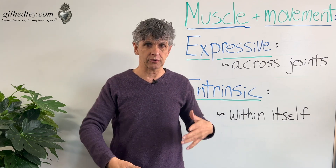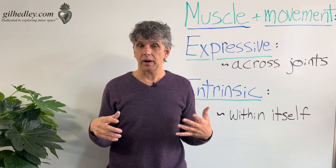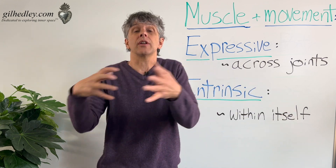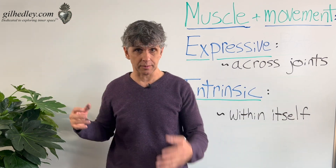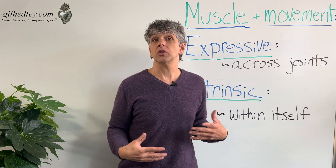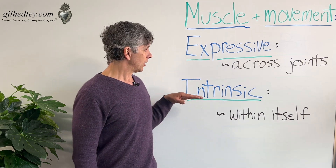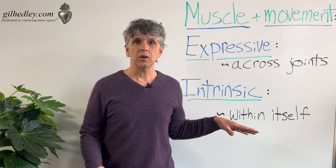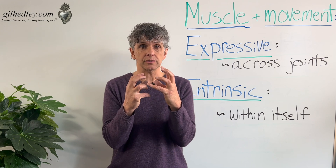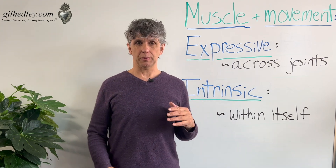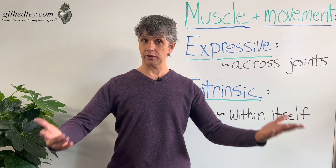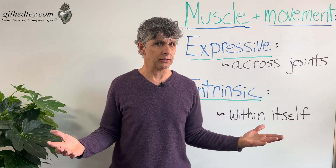In certain spasticity disorders, a single motor nerve partnership fires and it drags other tissue with it, and you get a flailing movement rather than the liquid, easy movement that we're used to enjoying in our lives. So intrinsic movement — we have the sort of perifascial shearing within the muscle tissues — and then expressive movements where those actions at large are crossing joints and generating movement through space.